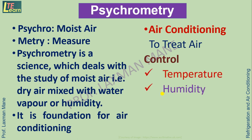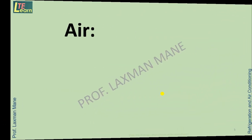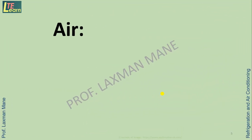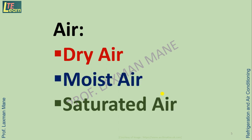Air conditioning controls parameters such as temperature, humidity, motion (that is velocity) and purity of air. In psychrometry there are three types of air: dry, moist, and saturated.